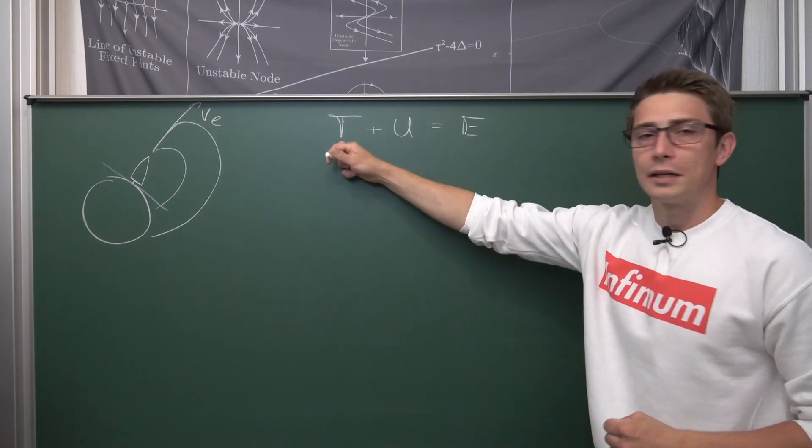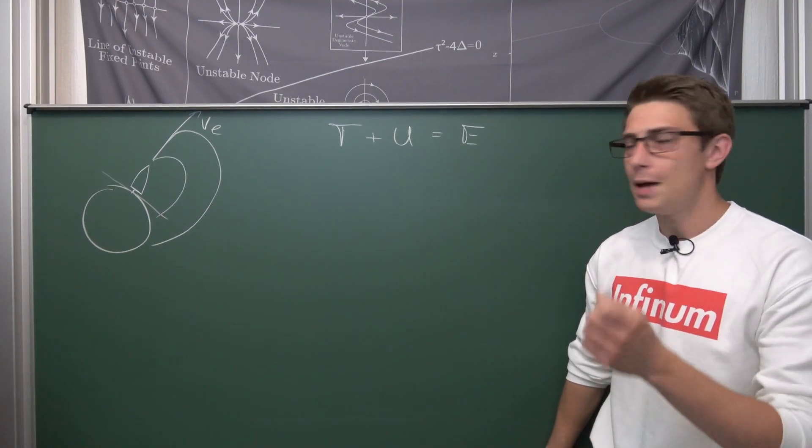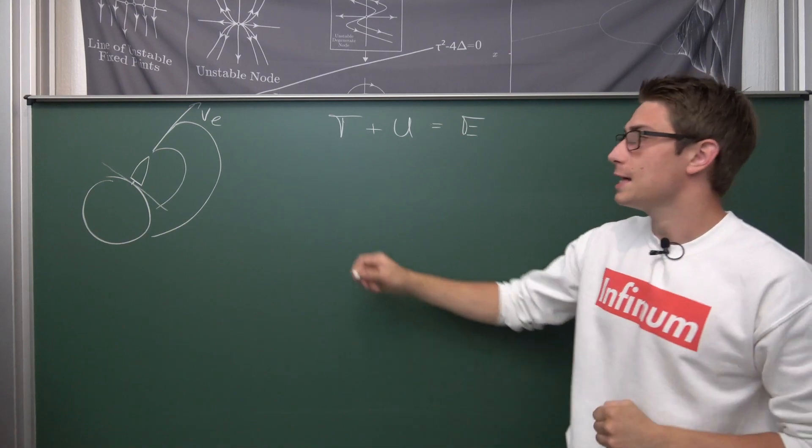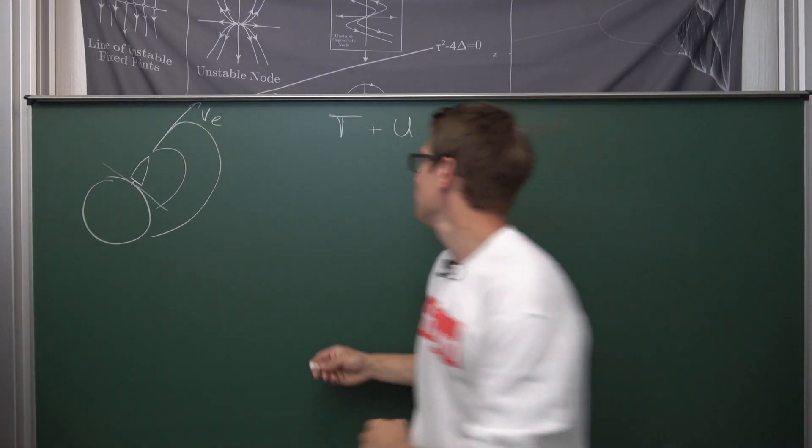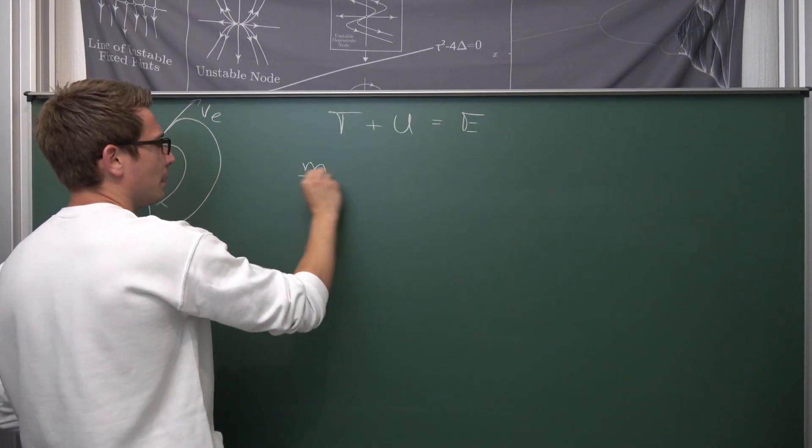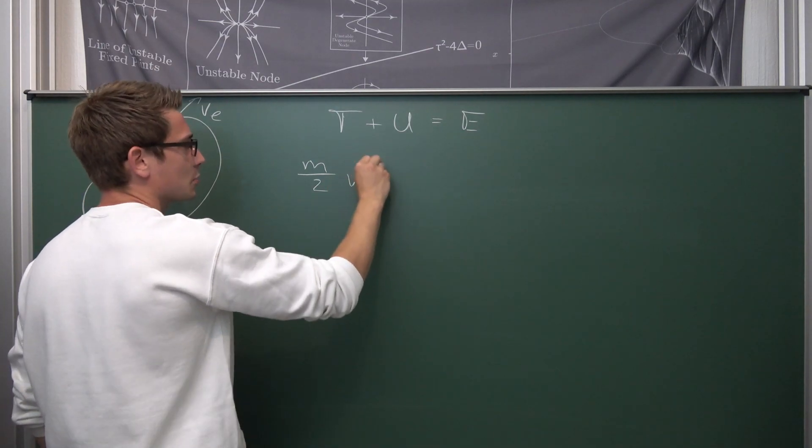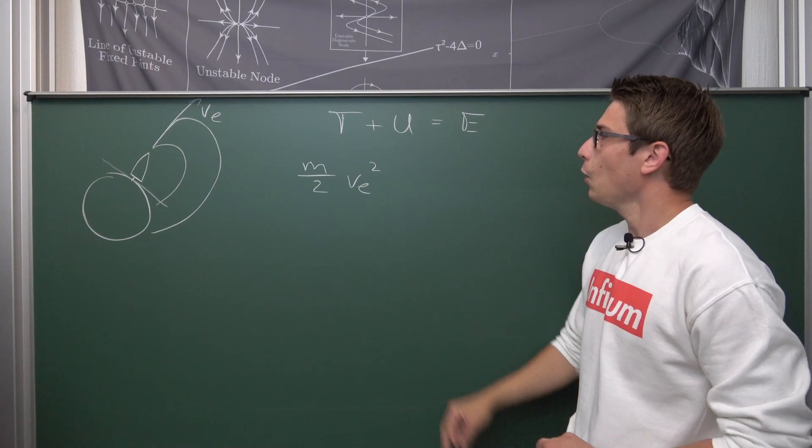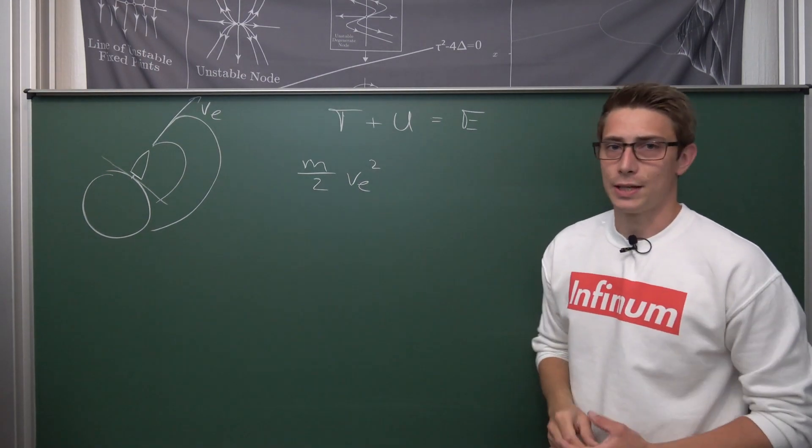Now what is our kinetic energy? Our kinetic energy is basically m over 2, where m is the mass of our rocket, times the escape velocity that we got. Meaning mass over 2 times the escape velocity, but squared obviously. This is our kinetic energy. Now what about the potential well that we got?